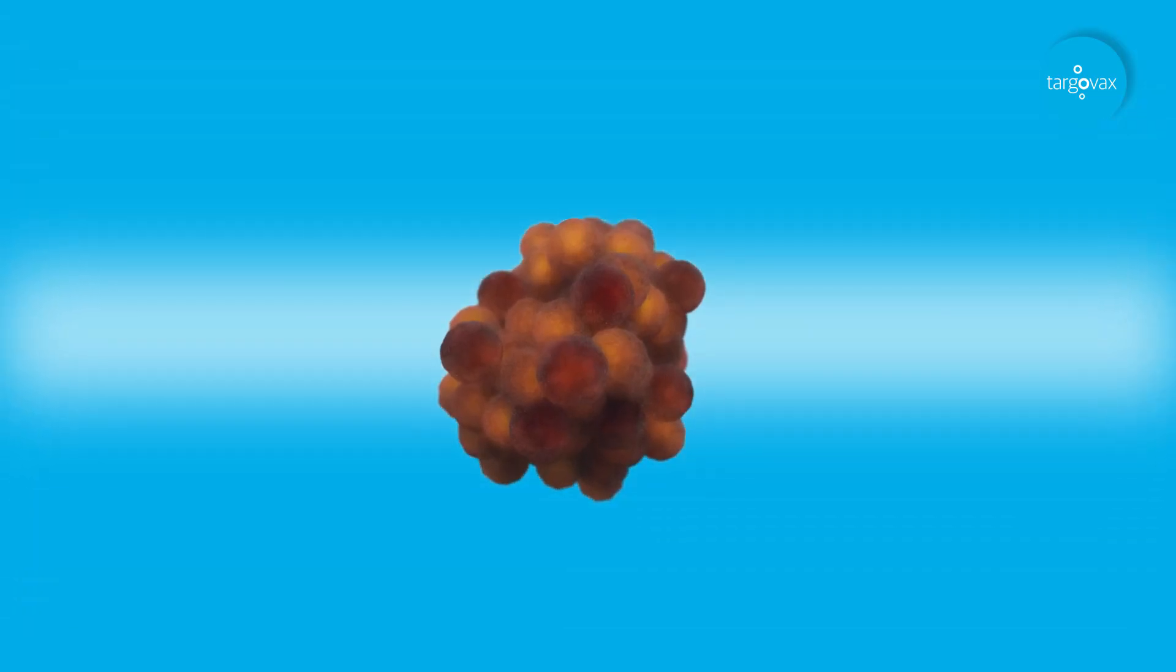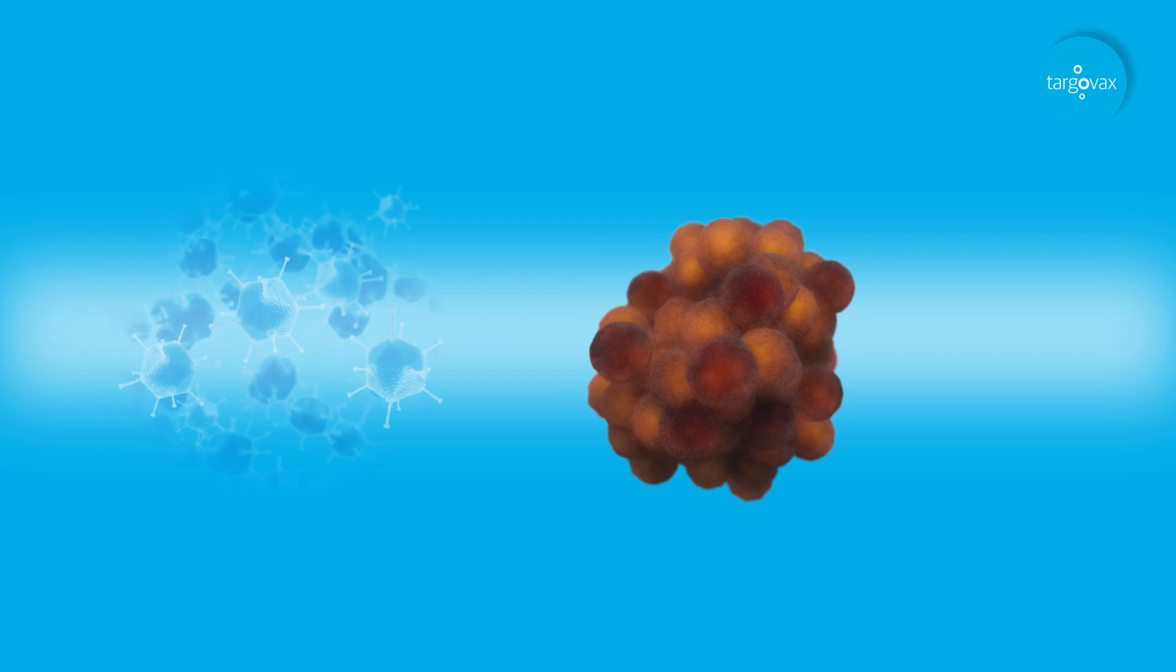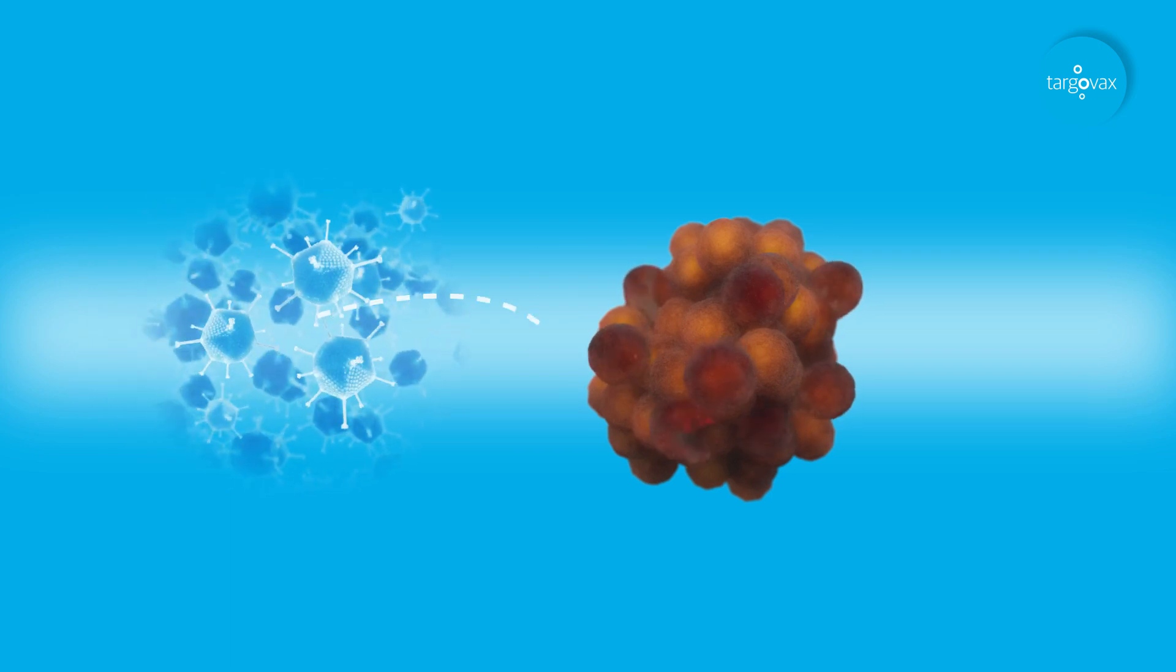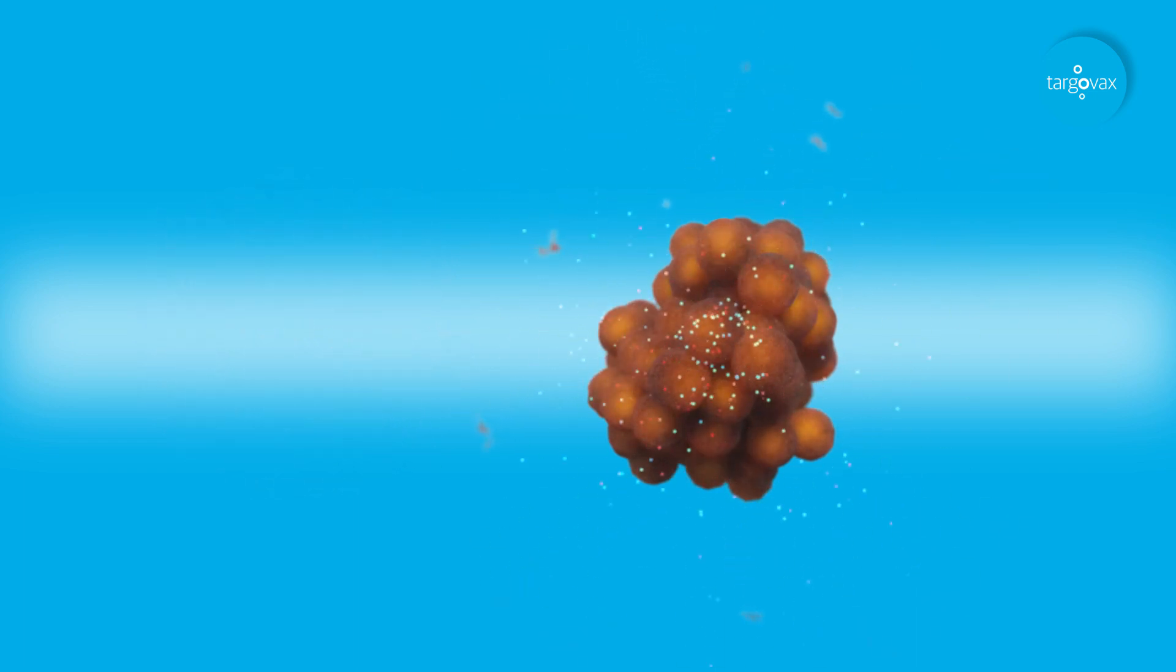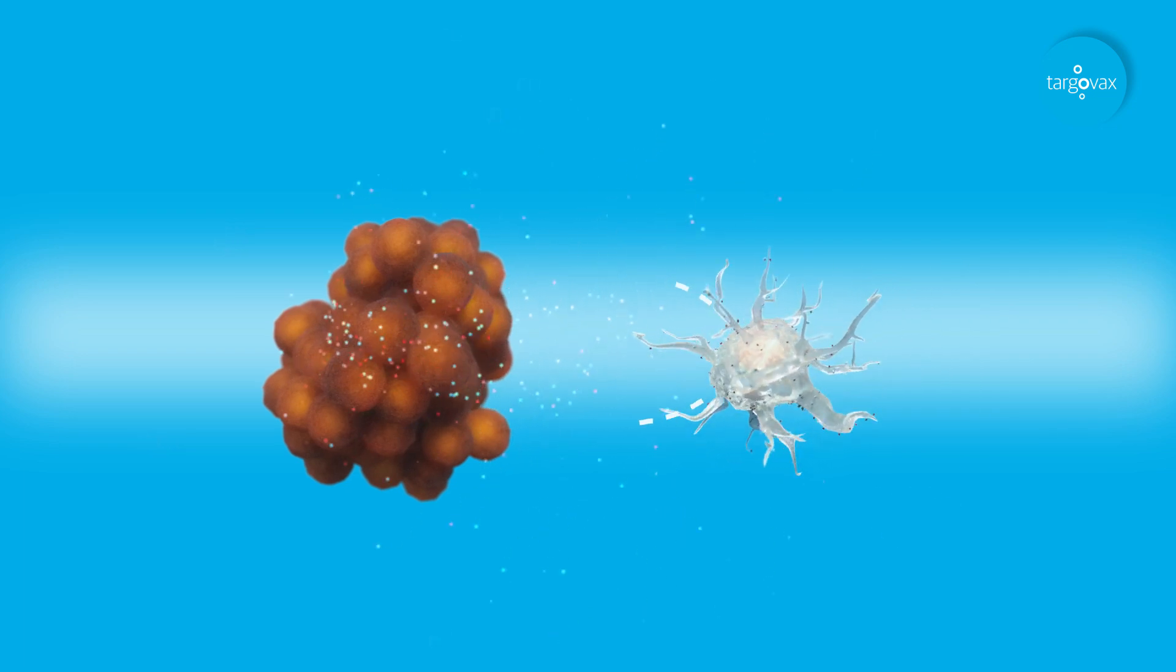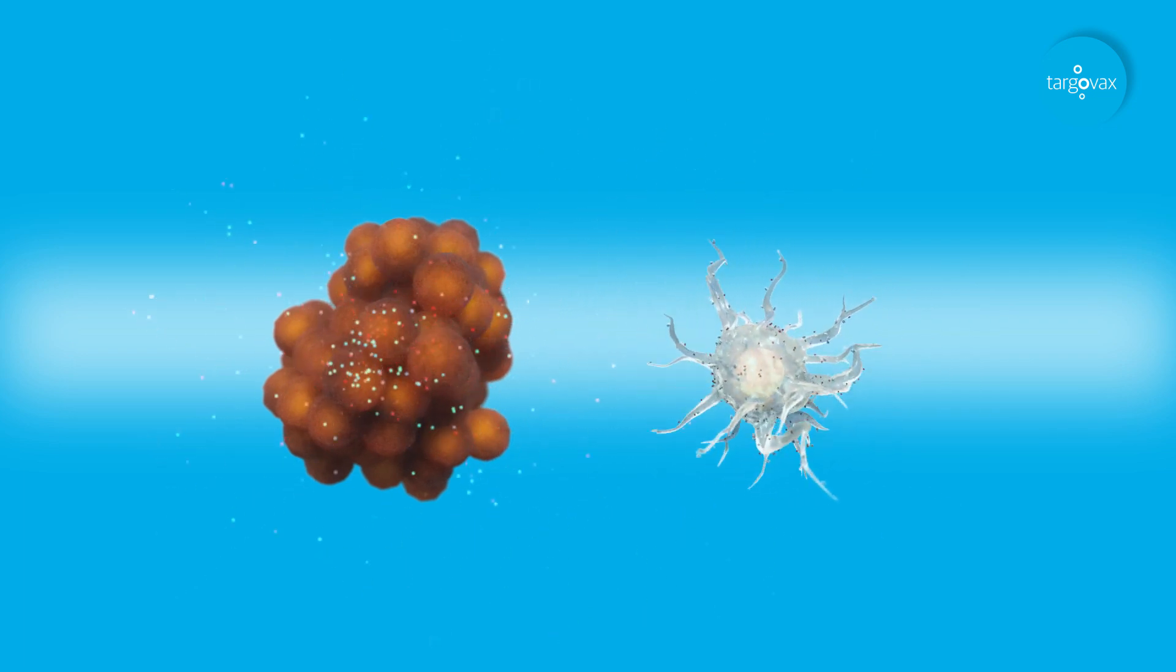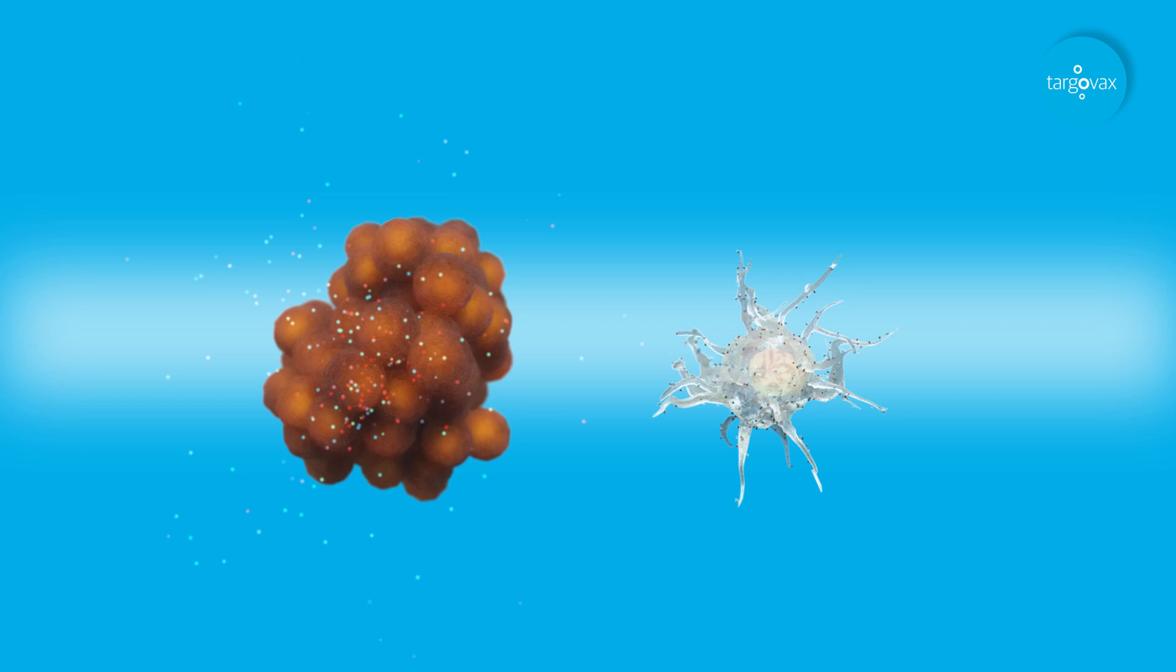To summarise, Targavax's Oncos Oncolytic Virus Therapy attacks tumours using two complementary killing strategies. Initially, cancer cells at the injection site are lysed as the virus replicates. Subsequently, a powerful systemic tumour-specific immune response is induced, generating tumour-killing T-cells that patrol the body in search of more cancer cells.